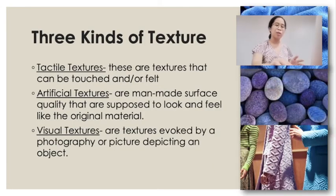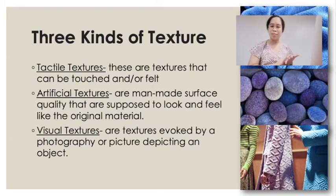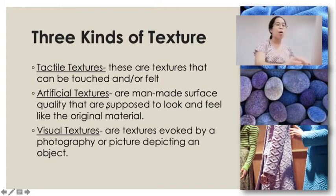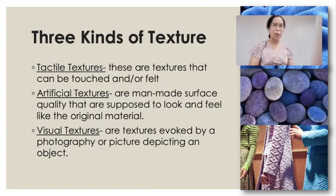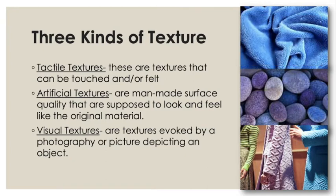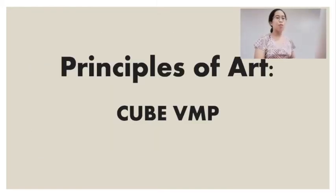There are three kinds of texture. Tactile textures are textures that can be touched or felt. Artificial textures are man-made surface qualities that are supposed to look and feel like the original material — for example, turf, which is a faux or fake grass on a soccer field that looks and feels like real grass but is man-made. Visual textures are textures evoked by a photograph or picture depicting an object — the texture is observed only through vision.